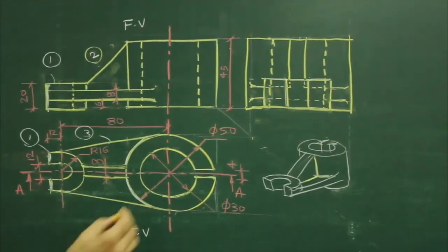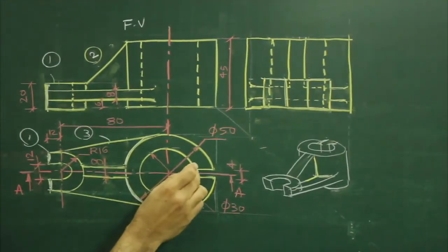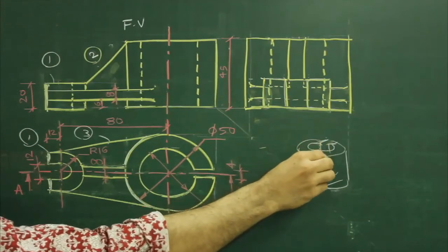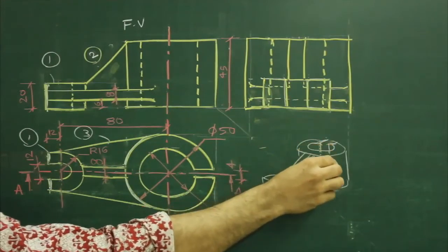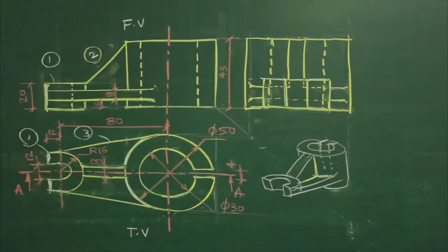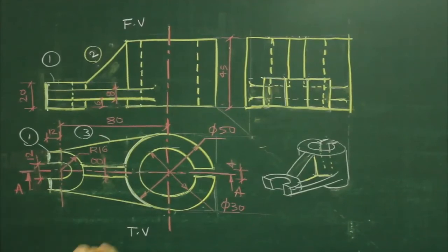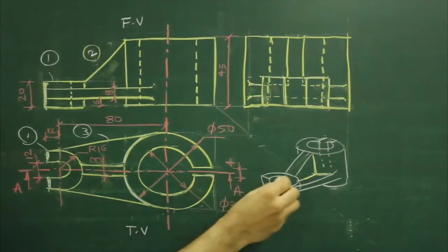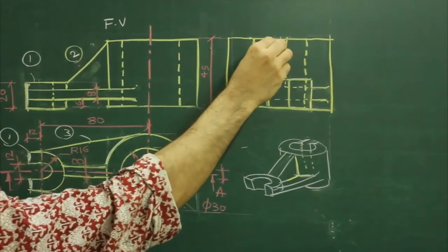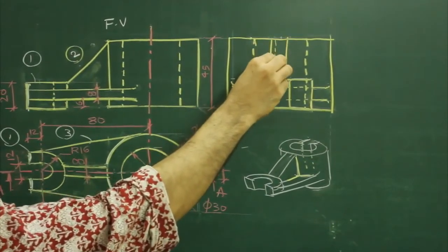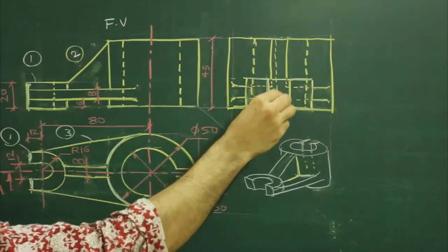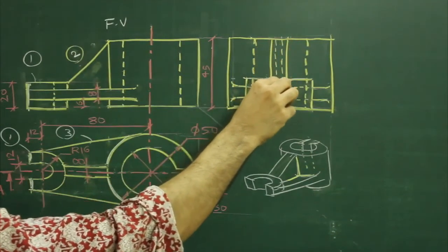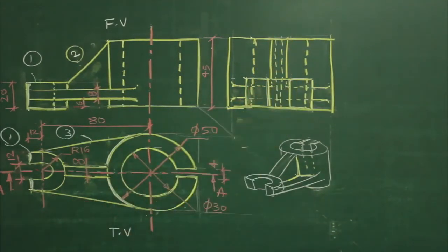Now last — that is this slot. If you see this circle, it has a slot which is going through and through. Whenever depth is not mentioned, it will be considered through and through. So we need to draw the slot — we will project this also in the middle.